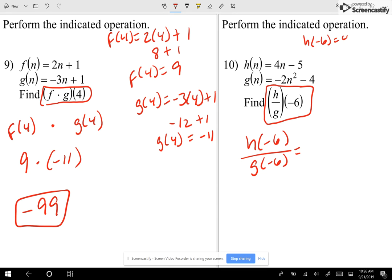Let me find out what h of negative 6 is. I have 4 times negative 6 minus 5. That's negative 24 minus 5. So h of negative 6 is negative 29.